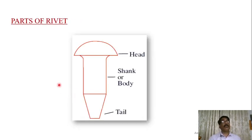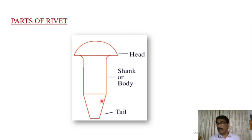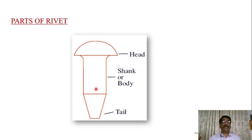There are three parts of a rivet: the cylindrical portion is known as the shank, the top portion is the head, and the lower portion is known as the tail. The size of the rivet is given by the diameter of the shank — so if a rivet is 10 mm, it means the shank diameter is 10 mm.